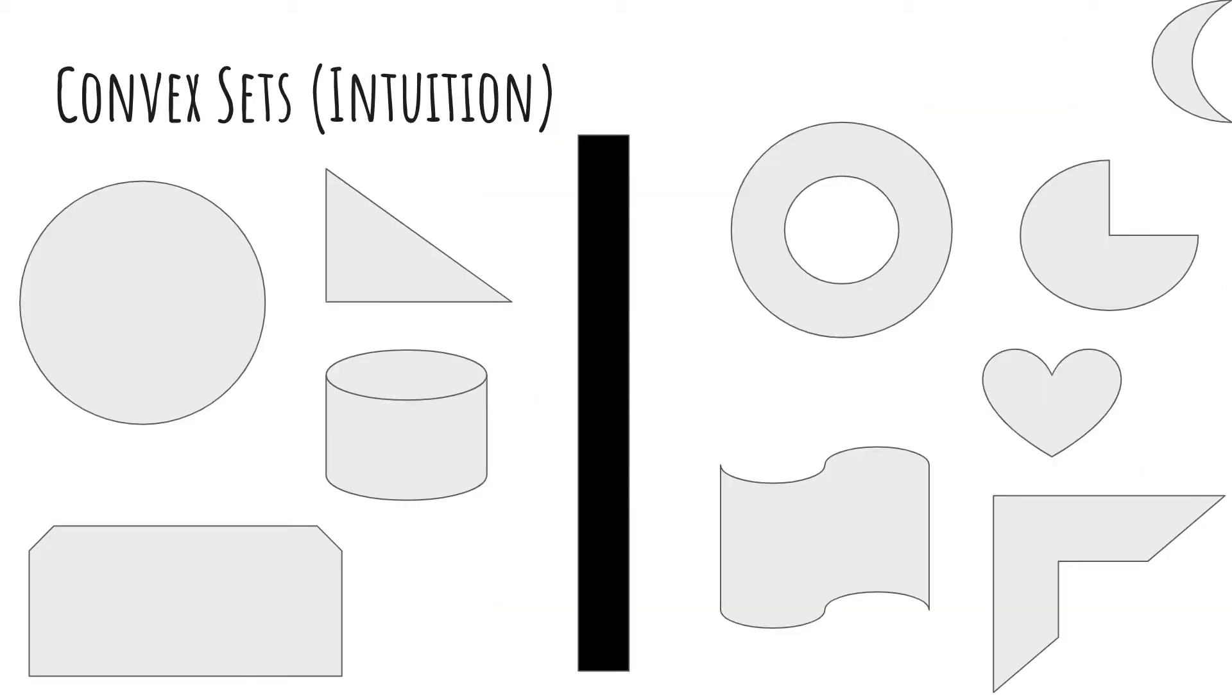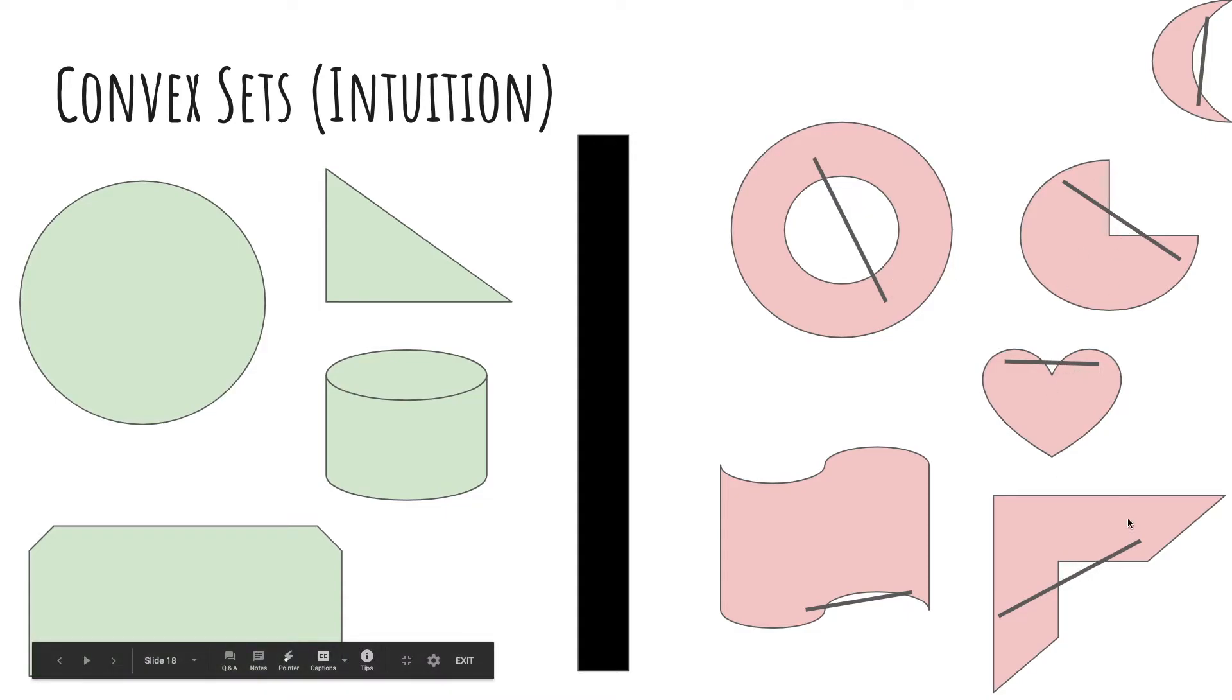So now we need to talk about convex sets. The sets on the left and the sets on the right have something different between them. The ones on the right have this property where I can find two points and draw the line, and then they would actually leave the set for some time here and here and here. So a convex set is one where if I take any two points and I draw the line segment between them, then that entire line segment must be contained in the set. And you can do that for any of the sets on the left here.